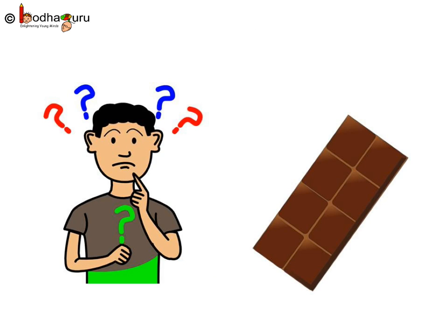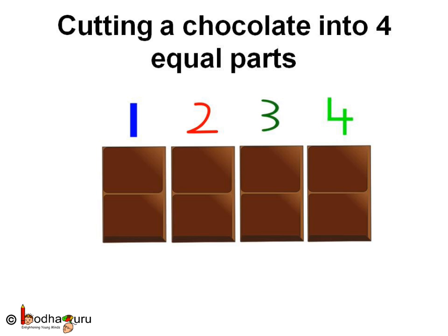Now, coming back to our chocolate bar — how do we share it equally amongst four children? Can we do it? Yes, we can. Here are four equal parts. When four parts of a whole thing are of the same size, we call each part fourths. We write one fourth as one by four, meaning one is cut into four equal parts.